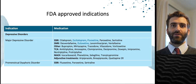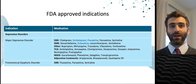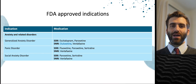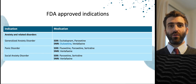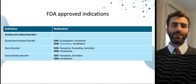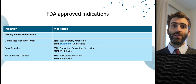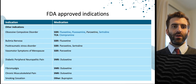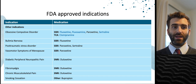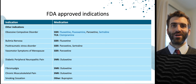Regarding FDA-approved indications, most antidepressant medications are FDA approved for major depressive disorder, though not every single one is. Some have specific approvals for other things. For example, in generalized anxiety disorder, escitalopram and paroxetine are two SSRIs that are FDA approved. Using another SSRI would technically be off-label, though that's often considered acceptable. Other approvals include eating disorders, pain conditions, and even smoking cessation.